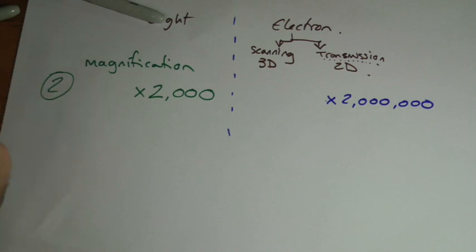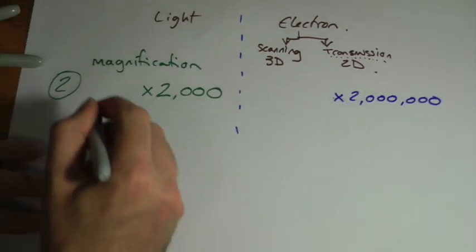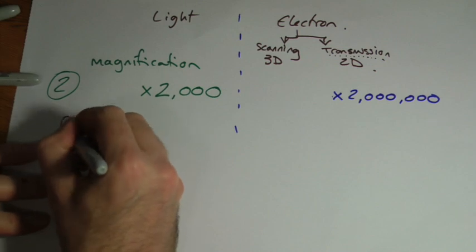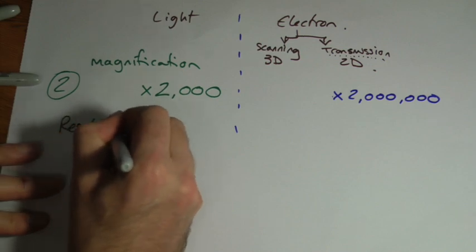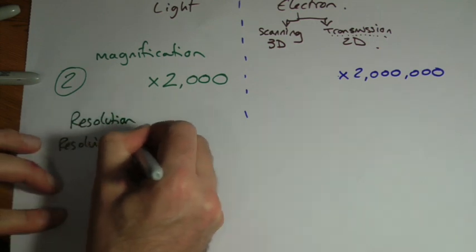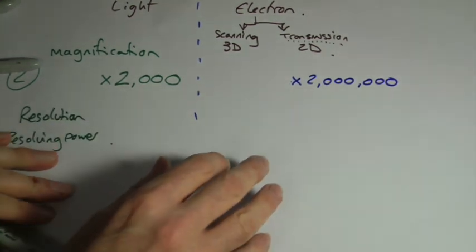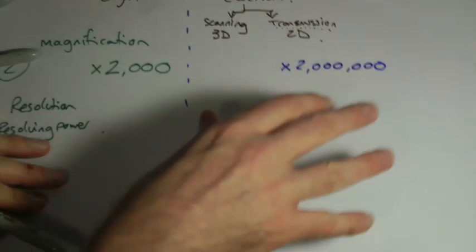Now why can these ones go so much higher? This is all to do with what's called the resolution or the resolving power. Resolution or resolving power. What this means is, resolution, you might be familiar with this when you talk about screens on TV screens or mobile phone screens.